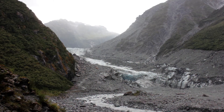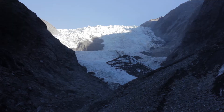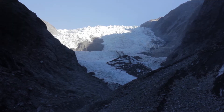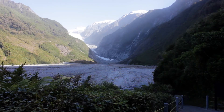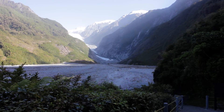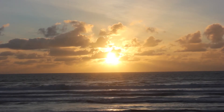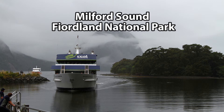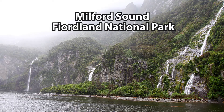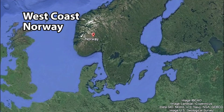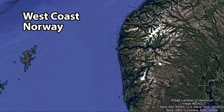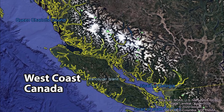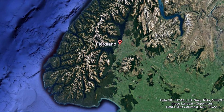Some glaciers, such as the Fox and Franz Josef Glacier, descend to low altitudes not far from the Tasman Sea. When global temperatures and accompanying sea levels rise, low-lying U-shaped valleys get filled with water to become a fjord. This produces a coastline with an irregular shape, like those also found in Norway, Western Canada, and Fiordland, New Zealand.